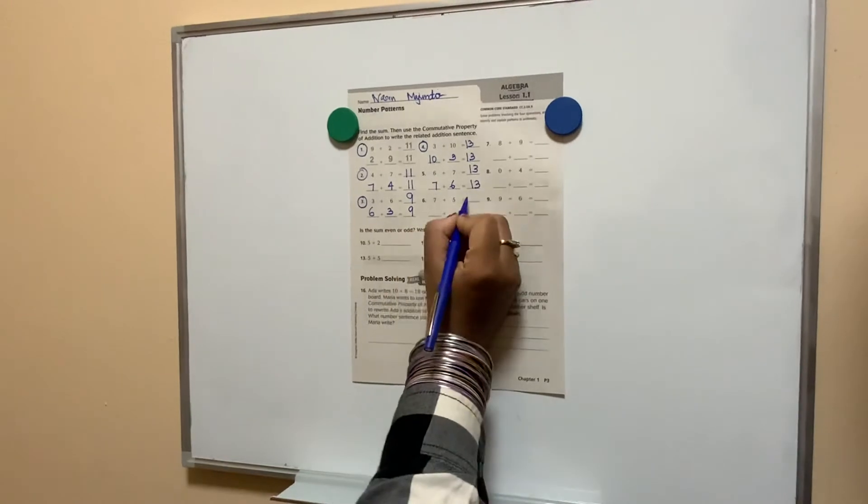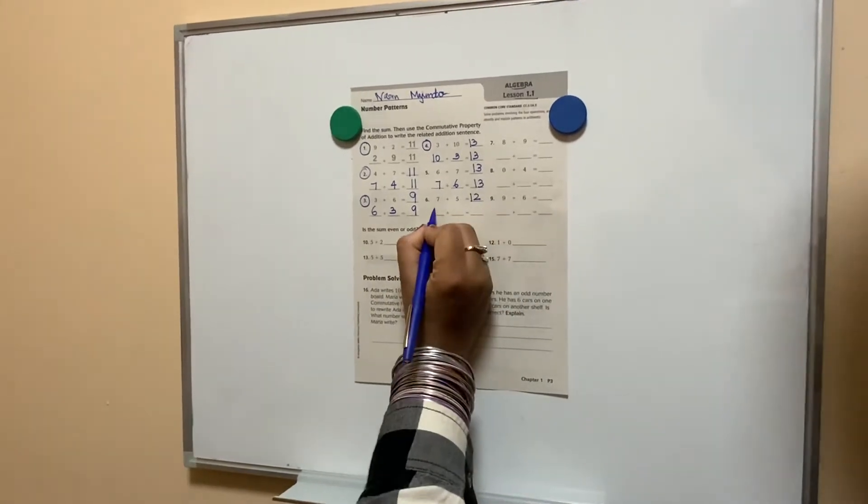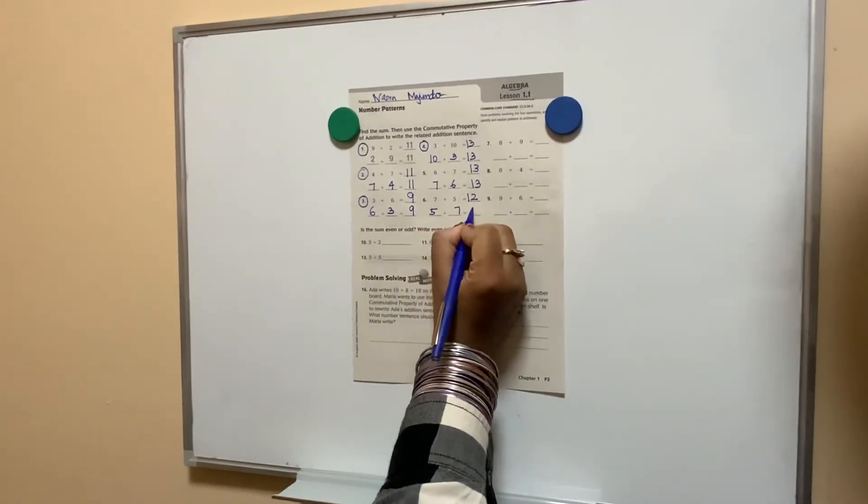Number 12. 7 plus 5 is 12. 5 plus 7 is 12.